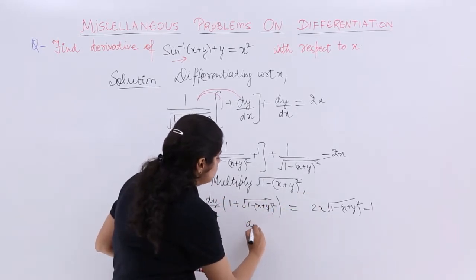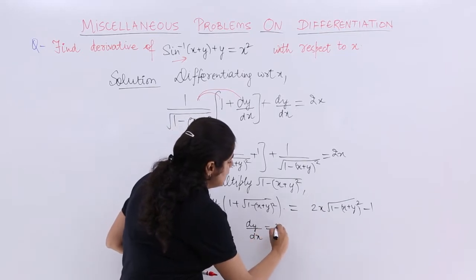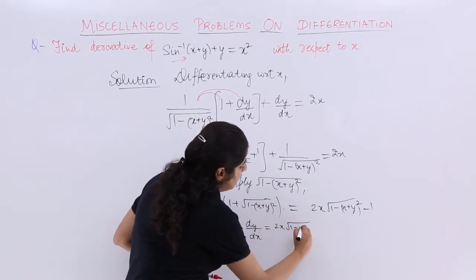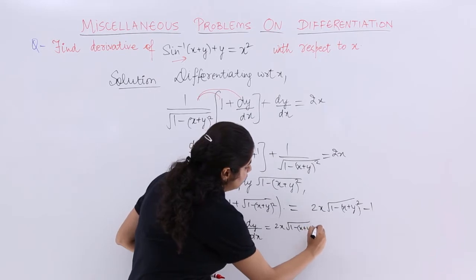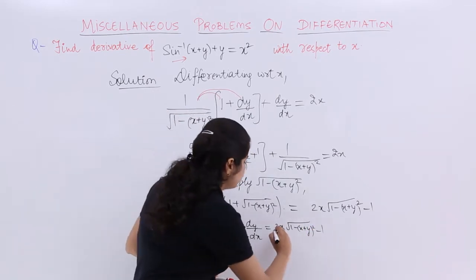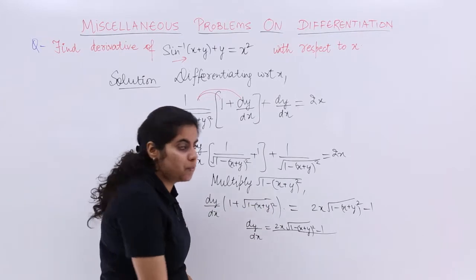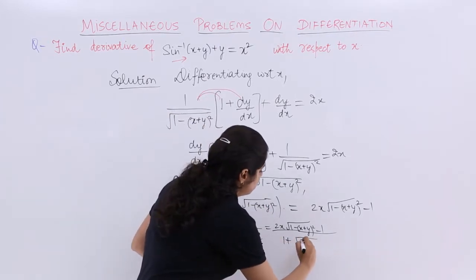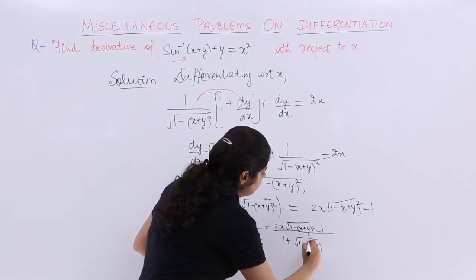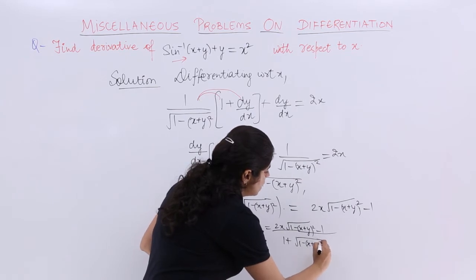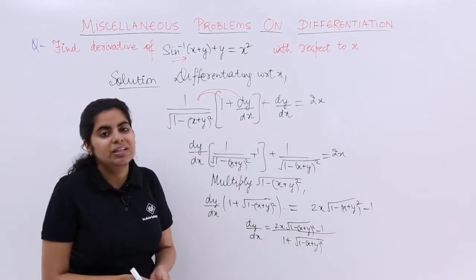Now dy/dx is nothing but this term upon this whole term. So what is my answer to dy/dx? dy/dx is equal to 2x multiplied by under root 1 minus (x+y)² minus 1 upon 1 plus under root 1 minus (x+y)². So that is your answer to this question.